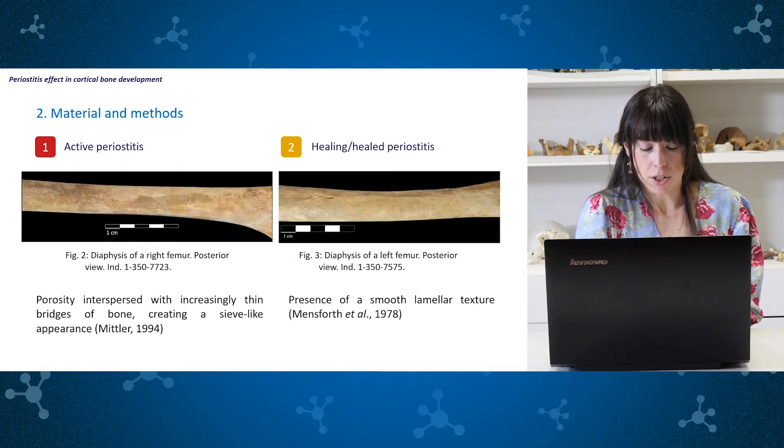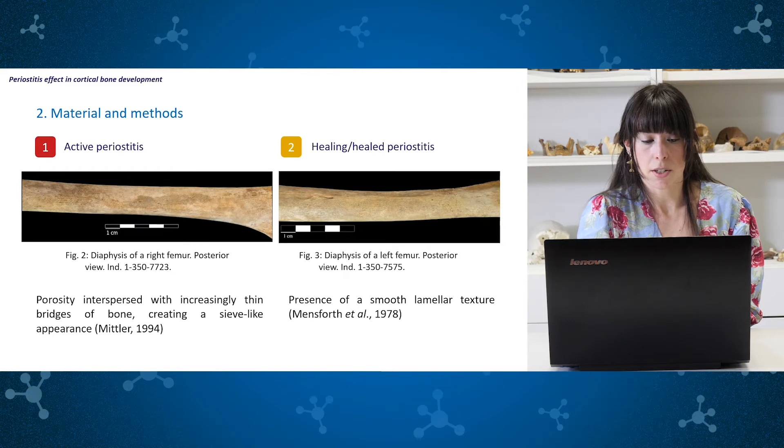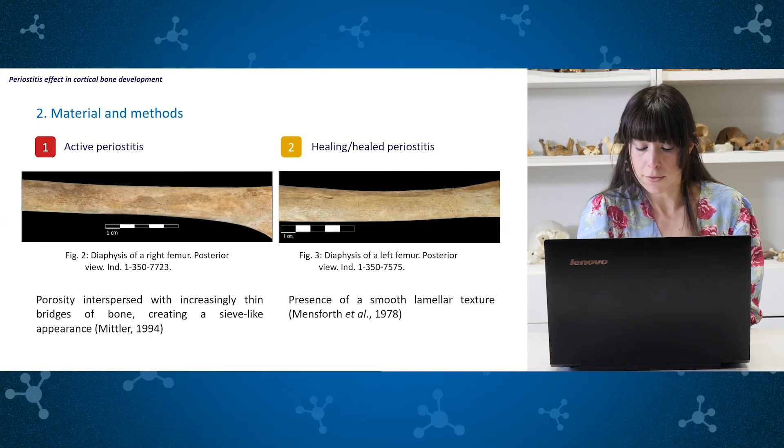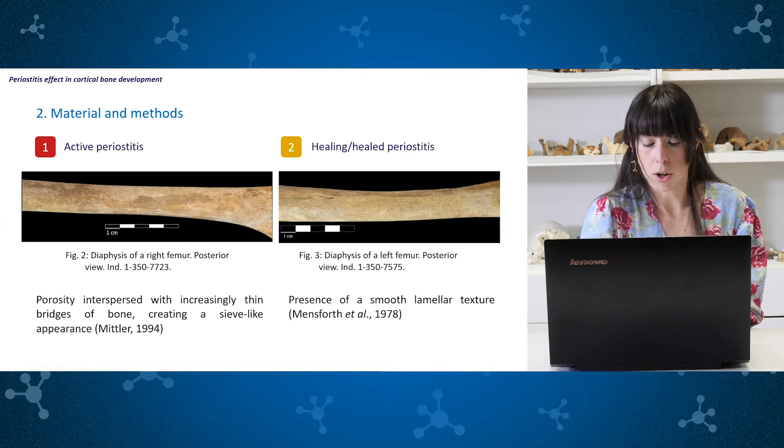Active lesions were defined as those exhibiting porosity interspersed with increasingly thin bridges of bones creating a sieve-like appearance. Meanwhile, healing lesions were identified based on the presence of a small lamellar texture. Examples of each of them can be seen on the slide.